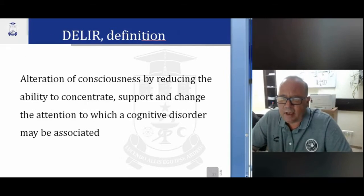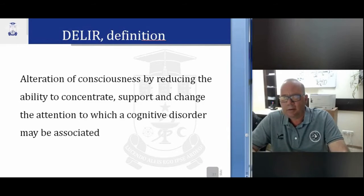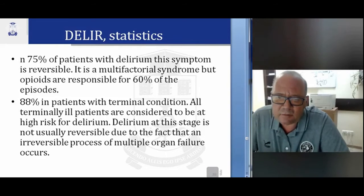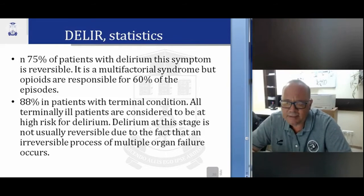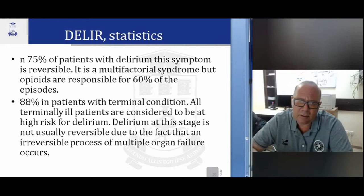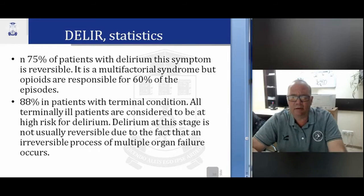Delirium: definition. Delirium is an alteration of consciousness with reduced ability to concentrate, sustain, and shift attention, to which cognitive disturbances may be associated. Statistics: in 74% of patients with delirium, the symptoms are irreversible. It is a multifactorial syndrome, but opioids are responsible for 60% of episodes. 88% of terminally ill patients are considered at high risk for delirium, which at this stage is usually irreversible due to multiple organ failure.